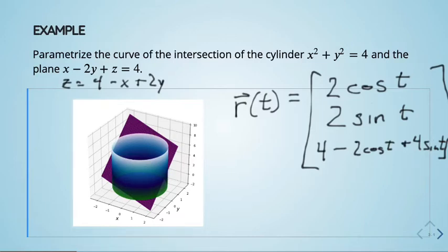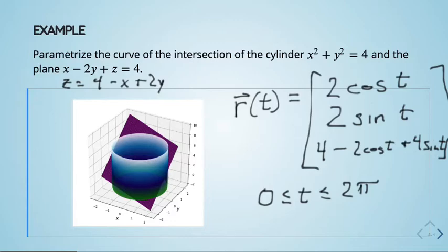And there we go — there's a parametrization of the curve. If you just want to trace it out once, put limits on your parameter: 0 to 2π will go once around this curve.